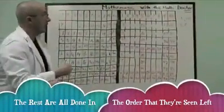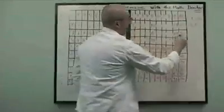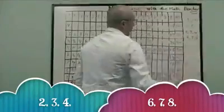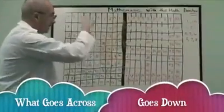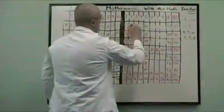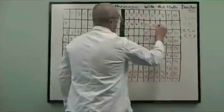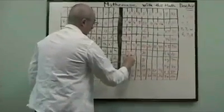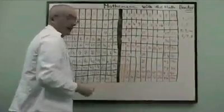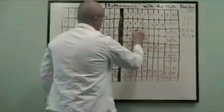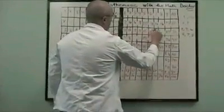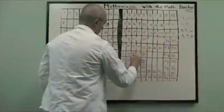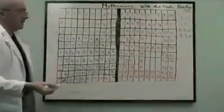The rest are done in the order that you see are left. So we're going to do twos, threes, fours, sixes, sevens, eights — always remembering what goes across goes down. Two, four, six, eight, ten, twelve, fourteen, sixteen... Have we done anything hard yet? No. And there are the threes done. Have we done anything hard? Not really.